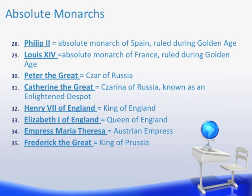Other absolute monarchs you need to know about: Philip II is the ruler of Spain during the Spanish Golden Age. Louis XIV is an absolute monarch of France, also ruling during the Golden Age. Peter the Great was the Tsar of Russia and is credited with modernizing Russia. Catherine the Great rules after him and is known as an enlightened despot because she took many ideas of the Enlightenment and tried to incorporate them into Russian law. Henry VIII of England and Elizabeth I of England are also included, along with Empress Maria Theresa of Austria, and Frederick the Great, King of Prussia, which is part of Germany today.